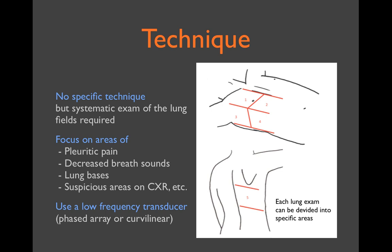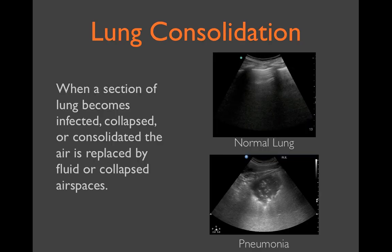Use a low-frequency transducer, such as the phased array or curvilinear probe. These will provide adequate depth for looking into the thorax. As we know, normal healthy lung is mostly air and produces a vague, foggy appearance on the ultrasound without any actual lung tissue image.